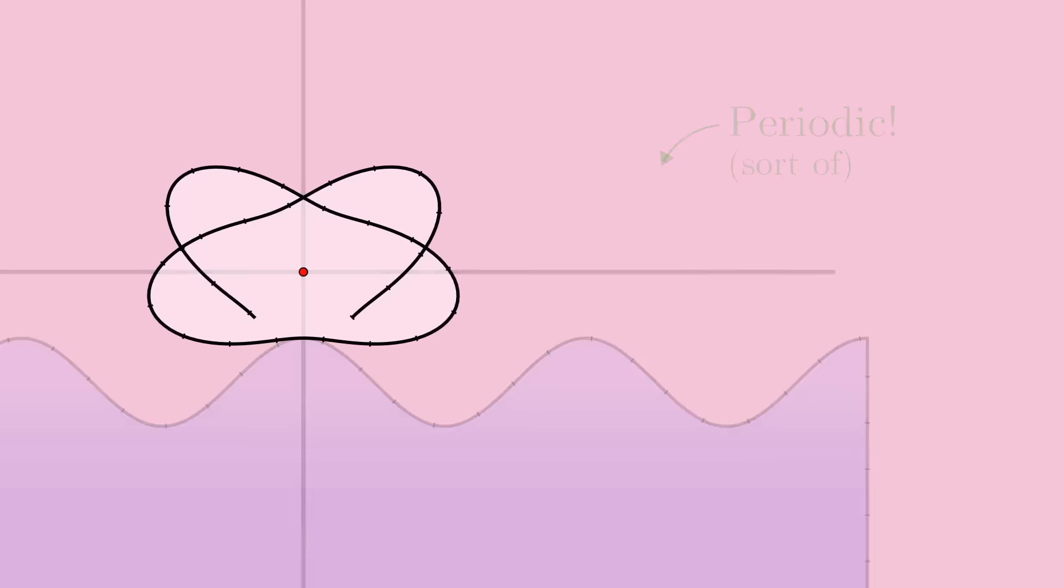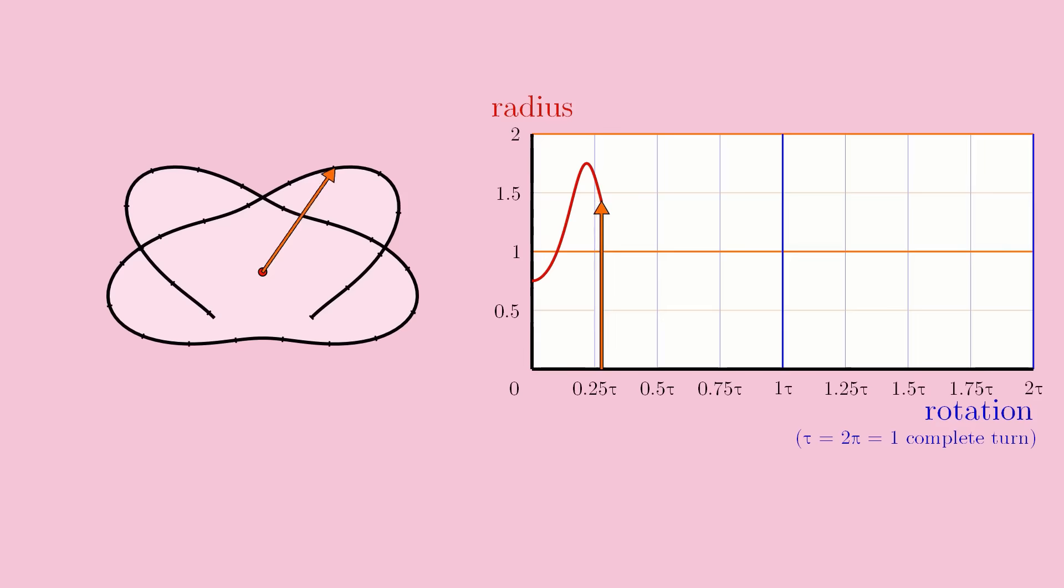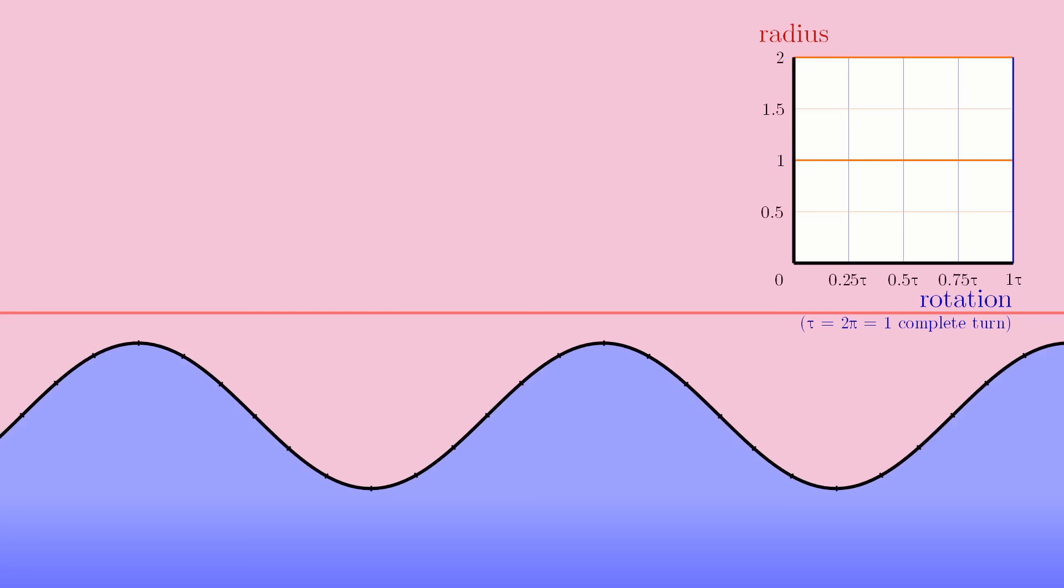Actually, in a certain sense, the wheel we got IS periodic. If I draw a plot of the wheel radius versus the angle of rotation, you can see that the wheel's radius DOES repeat itself as you rotate the wheel. So the radius IS periodic as a function of the rotation angle. The problem is, this period does NOT correspond to a complete rotation of the wheel. Although the radius of the wheel DOES return to its starting value, it does so WITHOUT rotating a full 360 degrees. The radius repeats itself before the angle does. They're out of sync with each other.